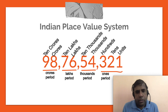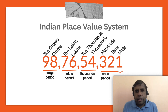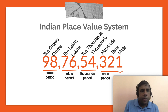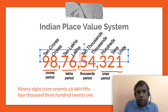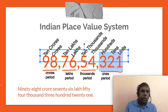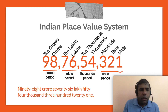The grouping of periods — each separated by commas — works as follows: the rightmost is the ones period, then the thousands period, then the lakhs period, and then the crores period. These periods help us read and write the number easily. This number, as written with commas, is read from the leftmost side as: 98 crore 76 lakh 54 thousand 321. We generally don't use plural forms while writing, so it's '98 crore,' not '98 crores.'